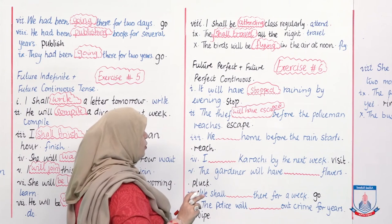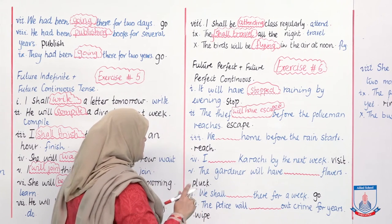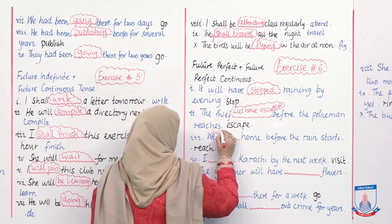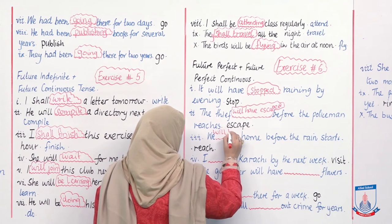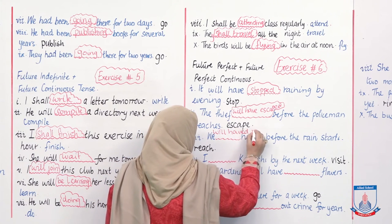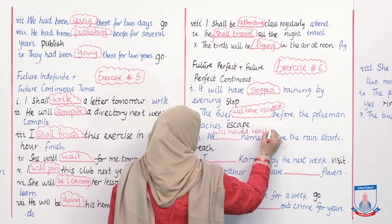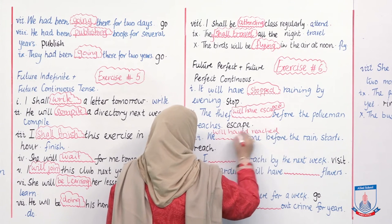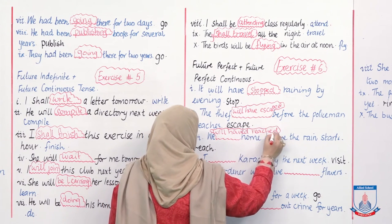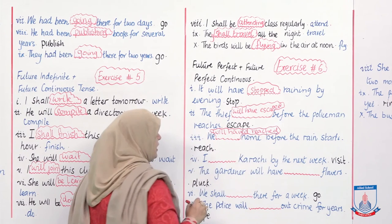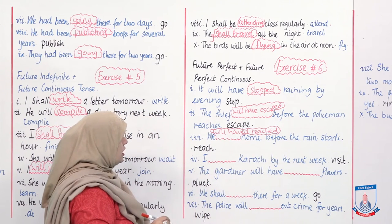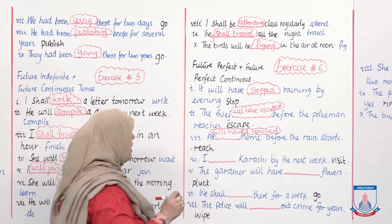'We ___ home before the rain starts.' Reach ka third form kya hoga? Reached — yeh sare aapke regular verbs hain. Answer: 'We will have reached home before the rain starts.'